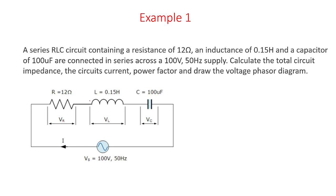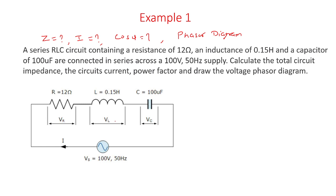Here we can observe a series RLC circuit is given. Resistance is 12 ohm, inductance is 0.15 henry, and capacitor is 100 microfarad. All are connected in series and a voltage source of 100 volt, 50 hertz supply is connected across them. In this circuit, we need to find the impedance, the circuit current I, the power factor cos phi, and we need to draw the phasor diagram.